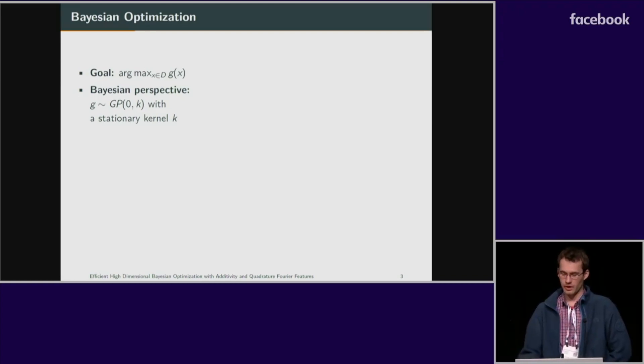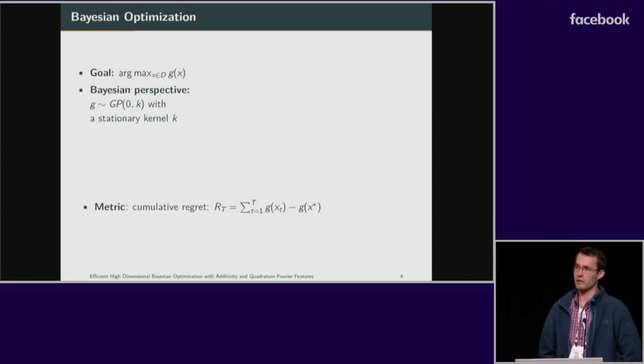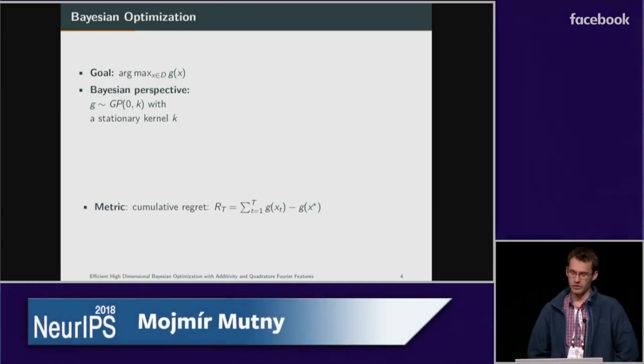We can also use an equivalent frequentist assumption. If we associate a cost to evaluating a function at a suboptimal point and sum this cost along the whole optimization procedure, we can define a metric called cumulative regret. And we formulate an algorithm that tries to minimize this regret along the optimization procedure.